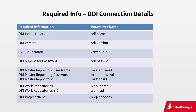To facilitate the setup of the phases, it is recommended to collect the following information: the ODI home location and version, the SVN kit location, the username and passwords for ODI and the master repository, the ODI work repositories, the SIDs of the master and work repositories, and the project names.